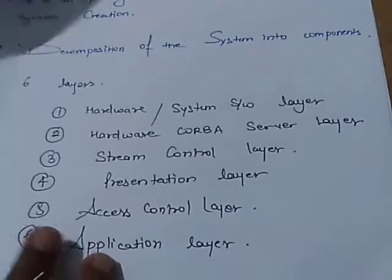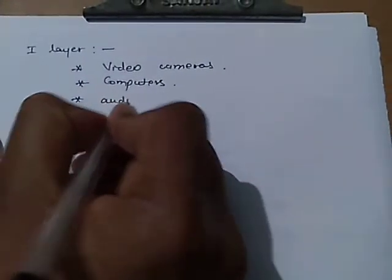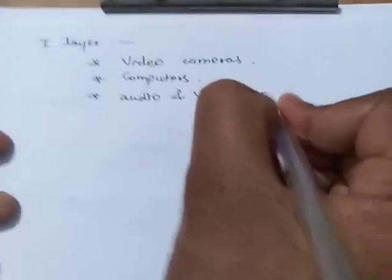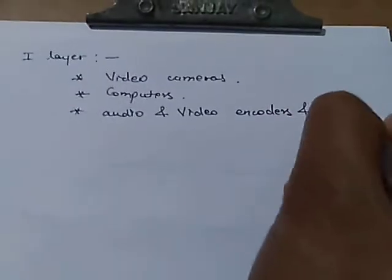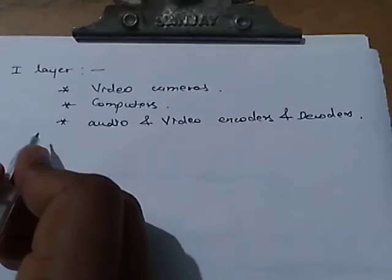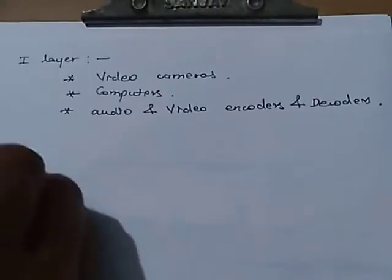Let us describe each layer one by one. The first layer is the multimedia hardware and software layer. Its main characteristics are that the layer is represented by a wide spectrum of devices such as video cameras, computers, and audio and video encoders and decoders. These devices on this layer are usually equipped with relevant hardware protocols.